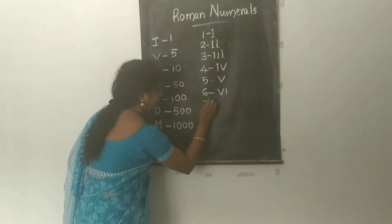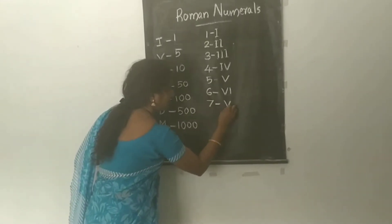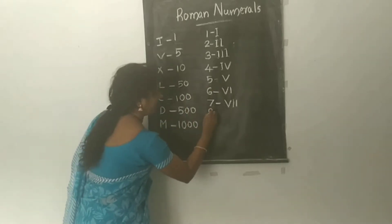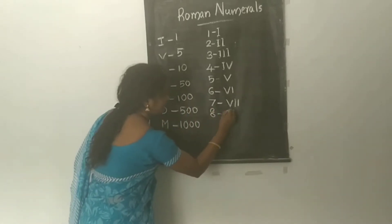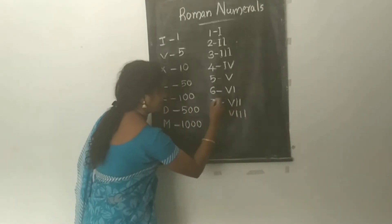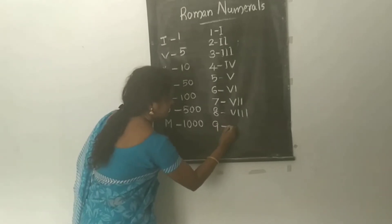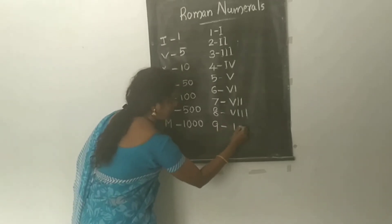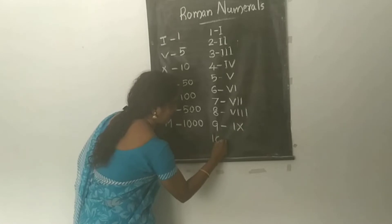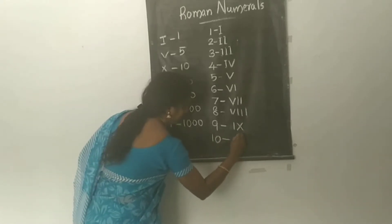7 is VII, 8 is VIII, 9 is IX, and 10 is X.